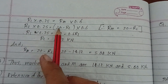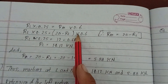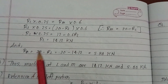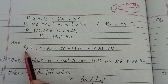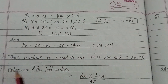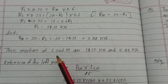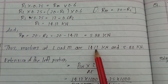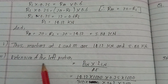Since RM equals 20 minus RL, substituting: RL into 0.125 equals (20 minus RL) into 0.167. Solving, RL equals 14.12 kilo Newtons and RM equals 5.88 kilo Newtons. So the reactions are: RL equals 14.12 kilo Newtons and RM equals 5.88 kilo Newtons.